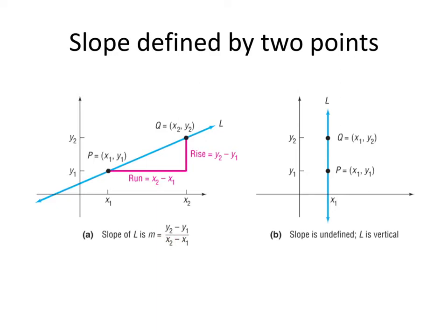The slope is the same no matter which two points we pick. That's the nice thing about lines. If we pick two different points, let's say if I picked this point and this point, and computed my rise over my run, the rise and the run numbers themselves might be different, but the ratio of those two numbers would be the same no matter which two points I pick.